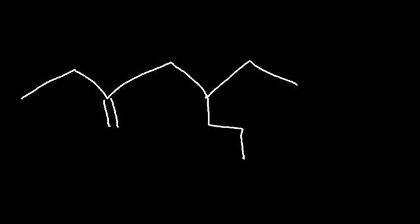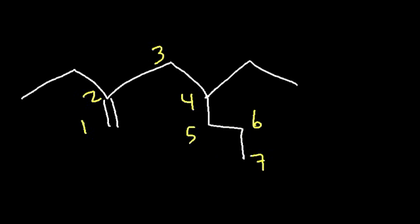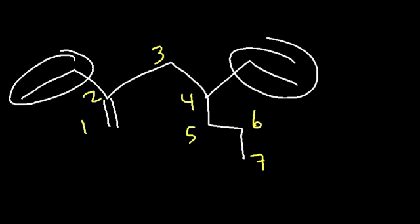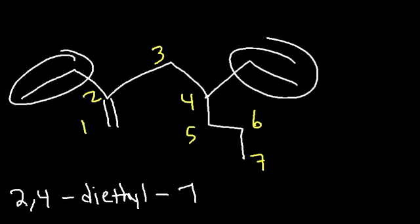Try this one. In this particular example, you need to identify the longest chain, and you want the double bond to be included in it. You want to give the double bond the lowest number. The longest chain actually contains 7 carbons, so we have a heptene. This is an ethyl group because it has 2 carbons, and this is another ethyl group — so we have ethyl groups on carbons 2 and 4. This is going to be called 2,4-diethyl-1-heptene, since the double bond is on carbon 1.